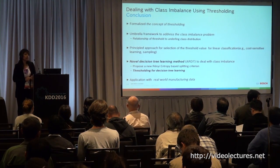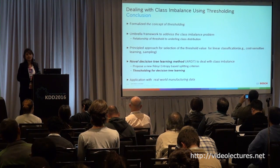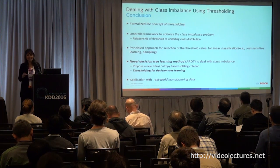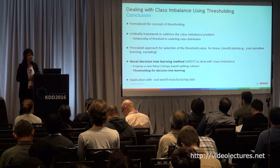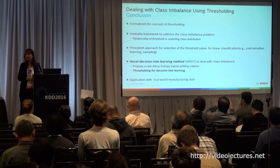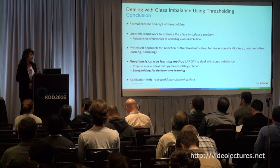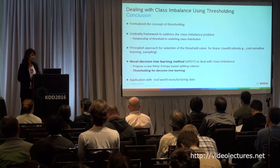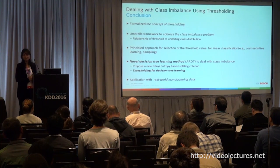To conclude, we formalized the concept of thresholding. We had an umbrella framework to address the class imbalance problem, and showed the relationship between a threshold and the underlying class distribution. We provided a principled approach for selection of threshold in linear classification, and proposed a novel decision tree learning method to deal with class imbalance based upon Renyi entropy, demonstrating its usefulness on real-life manufacturing data.